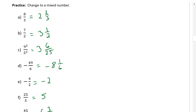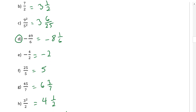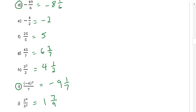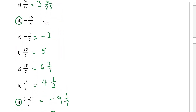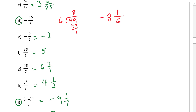Let's take up some of the particularly difficult problems — D and I. Let's look at D: minus 49 over 6. We take 6 and divide it into 49, ignoring the negative sign for now. 6 into 49 goes 8 times. 6 times 8 is 48, remainder 1. So the answer is 8 and one-sixth — the whole number comes from the quotient, the remainder is 1, and the denominator stays 6. Don't forget to put the negative sign in.